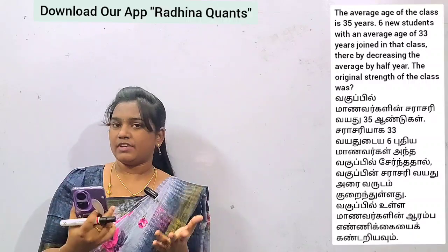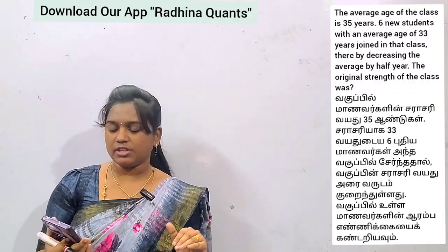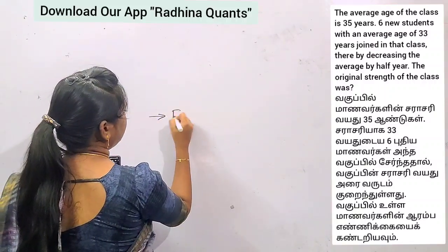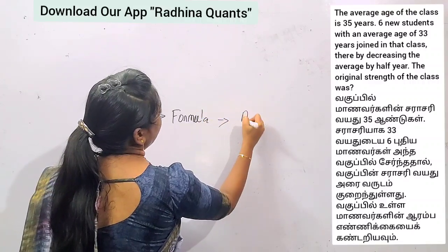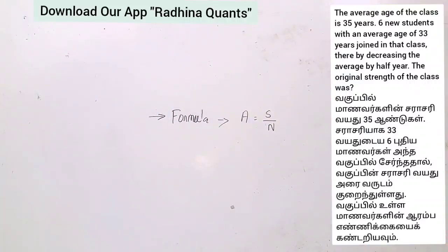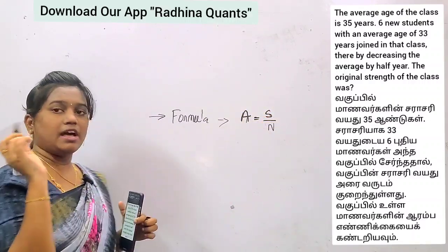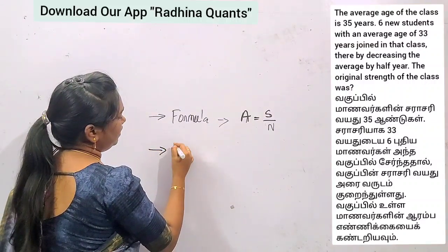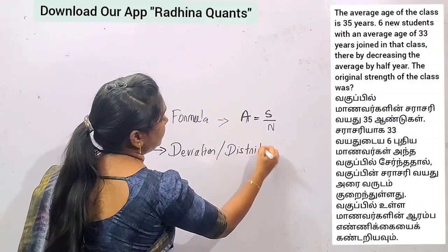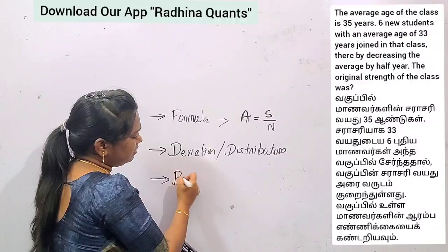Now the average is for the new total strength. This is an easy level question. The basic formula method is: Average equals Sum divided by Number. Using this formula, we can solve the average question.